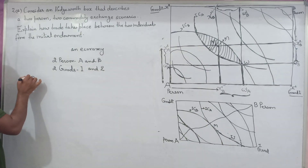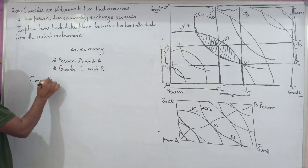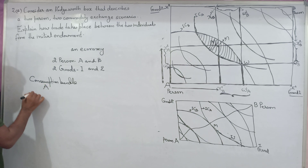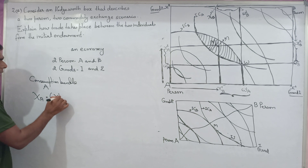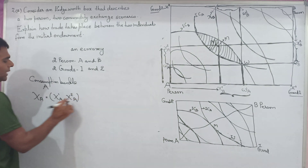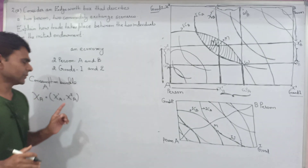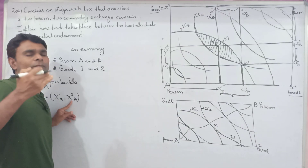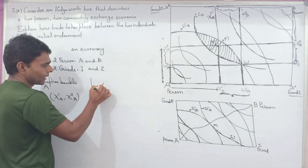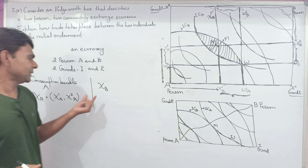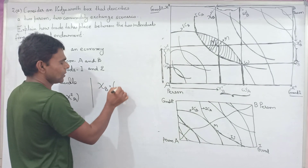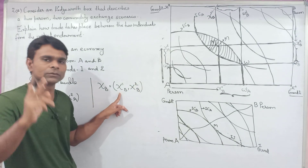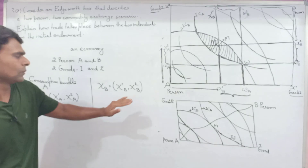The consumption bundle for each person is as follows. Person A is represented by XA, which consists of X1A and X2A. X1A represents person A's consumption of good one, and X2A represents person A's consumption of good two. Similarly, the consumption bundle of person B is represented by XB, which consists of X1B and X2B. X1B is person B's consumption of good one, and X2B is person B's consumption of good two.